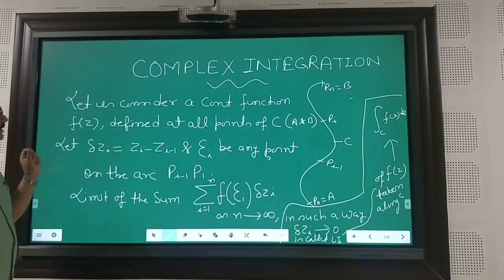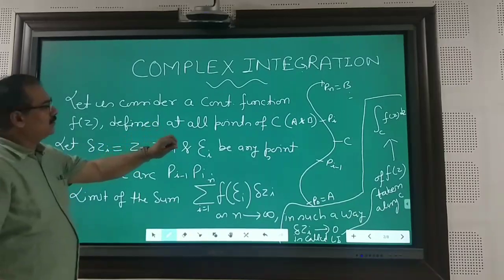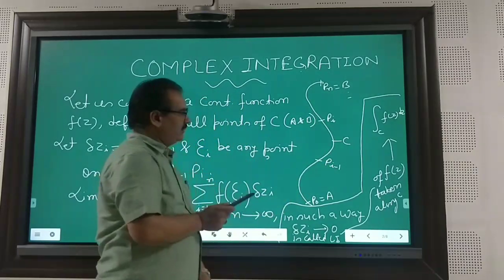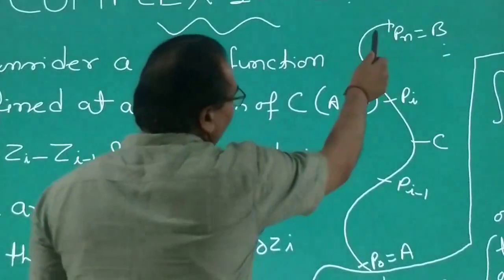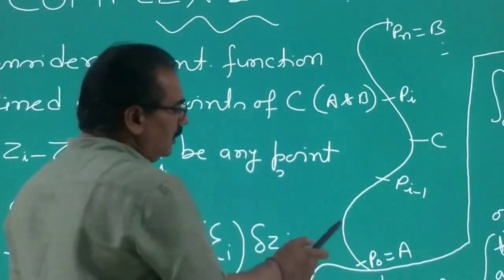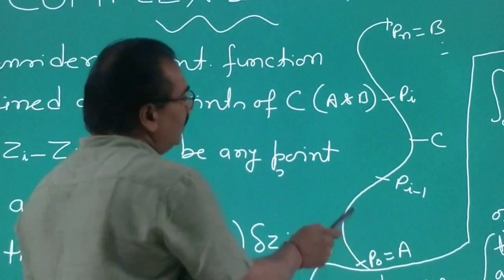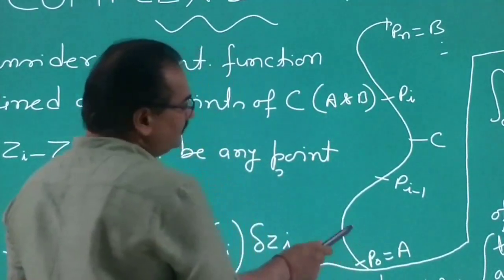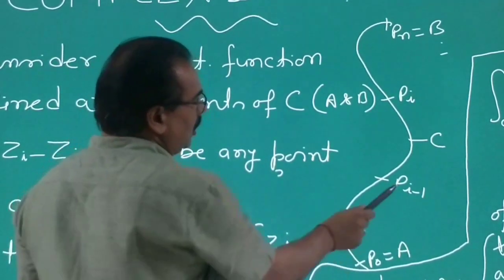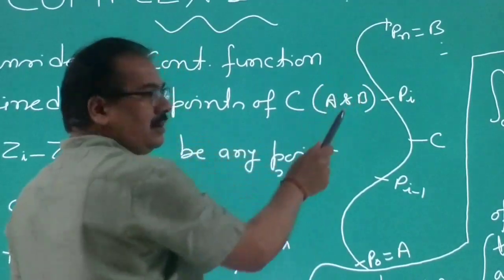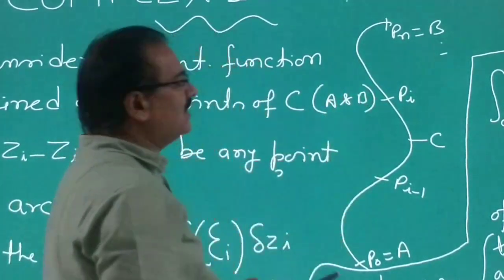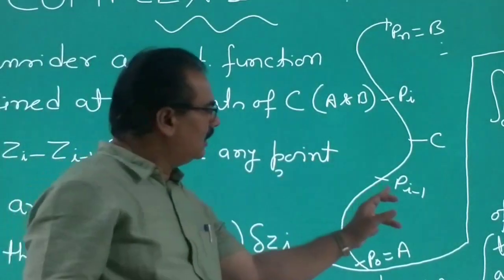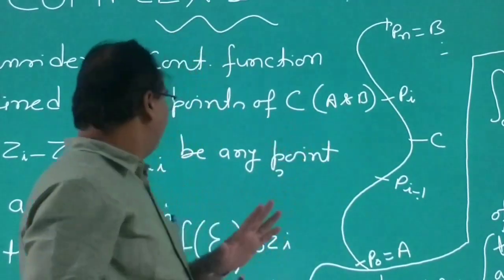Let us consider a continuous function f(z) defined at all points of this curve. Just look at this curve — you have already gone through line integration in vector calculus. If you subdivide this curve C into small subdivisions, and this curve has two vertices a and b, with points taken as p₀, pᵢ₋₁, pᵢ up to pₙ, then to discuss the actual length and summation as a whole, we consider the sub-arc from pᵢ₋₁ to pᵢ.